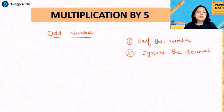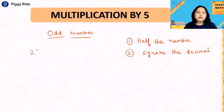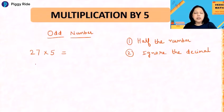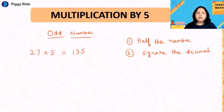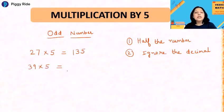Let's take an odd number: 27 times 5. For small numbers you can do quick multiplication, but this concept you can easily apply for any big number. Half of 27 is 13.5 — ignore the decimal — so the answer will be 135. Let's take another example: 39 times 5. Half of 39 is 19.5, so the answer will be 195.